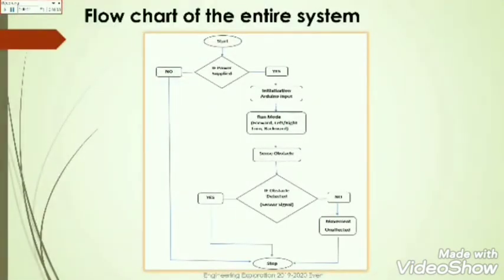Next is the flow chart of the entire system. According to the flow chart, if power is supplied, the input given to the Arduino is initialized, thus sending signals to the motors to start moving in front, left, right and backward directions. If any obstacle is present, the motors stop moving, else the movement is unaffected. In run mode they exhibit digging function.